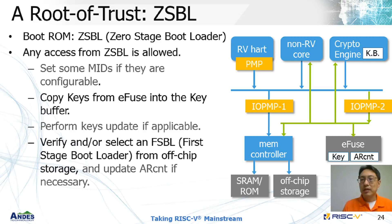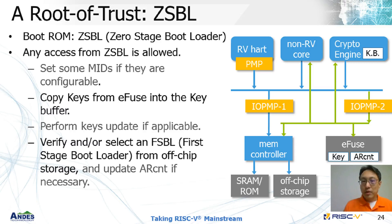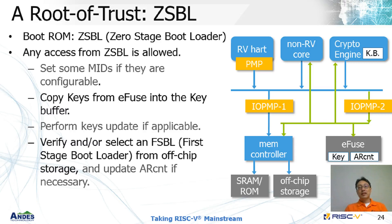Subsequently, we copy cipher keys from eFuse to the key buffer inside the crypto engine. If any key update occurred — for example, in the previous run, new keys are stored in off-chip storage by a key wrap — we can unwrap the new keys using the old key and replace keys in eFuse at this moment. After that, asymmetric DSA and ARCounter are used to verify if the first-stage bootloader, or FSBL, in off-chip storage is the original and up-to-date. If we have two or more FSBLs, the selection policy is implemented here. If a new version of FSBL is found, ARCounter should be updated accordingly.